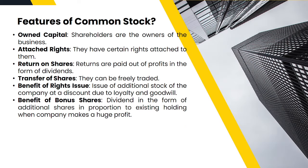The next question is: what are the features of common stock? The first feature is owned capital — shareholders are the owners of the company, so they own the capital. The second feature is attached rights. Shareholders have certain rights, for example voting rights, which allow them to participate in taking crucial decisions related to the company.